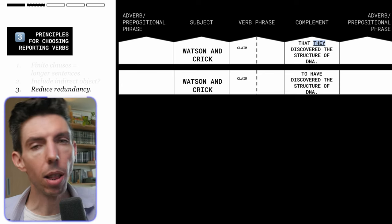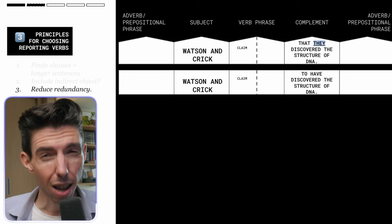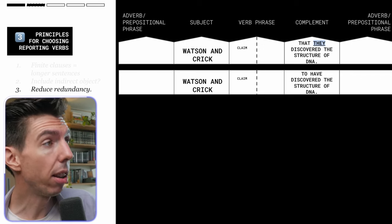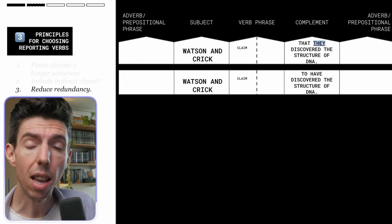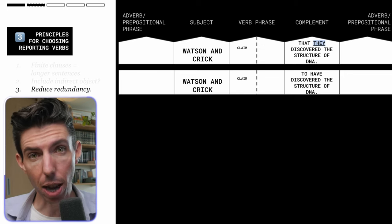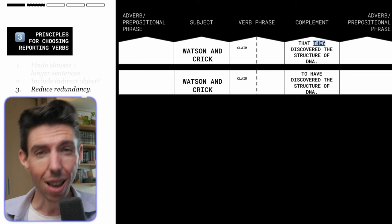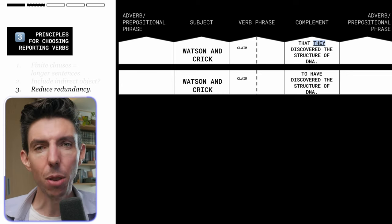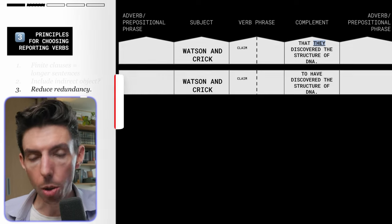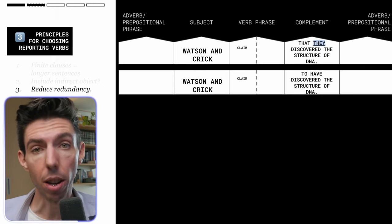Finally, some reporting verb choices allow you to reduce redundancy. If you're using a verb that requires an indirect object, it may force you to repeat certain participants. For example, 'Watson and Crick claim that they discovered the structure of DNA' repeats the subject twice — 'Watson and Crick' and 'they.' It's a little clumsy. So instead of using a finite noun clause, you can use a to-infinitive clause, which doesn't require the subject: 'Watson and Crick claim to have discovered the structure of DNA.'